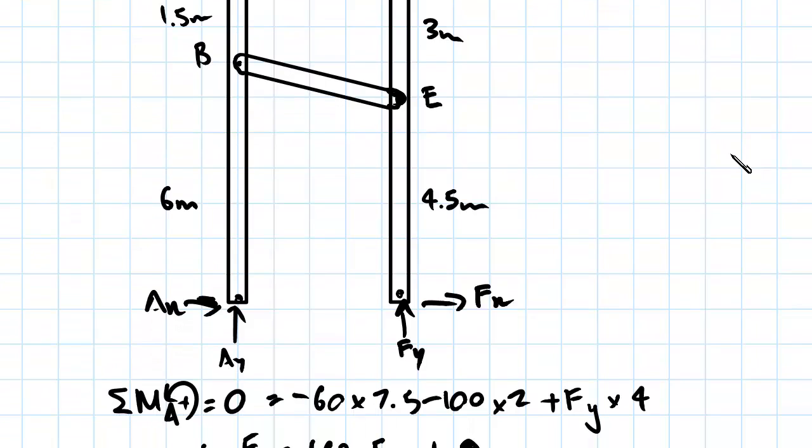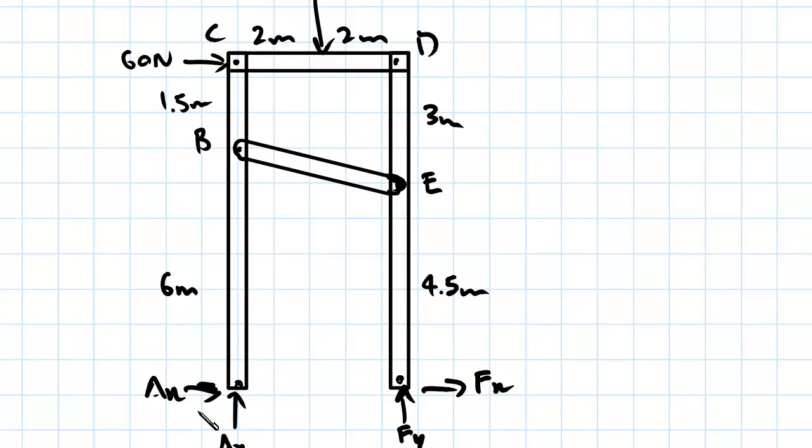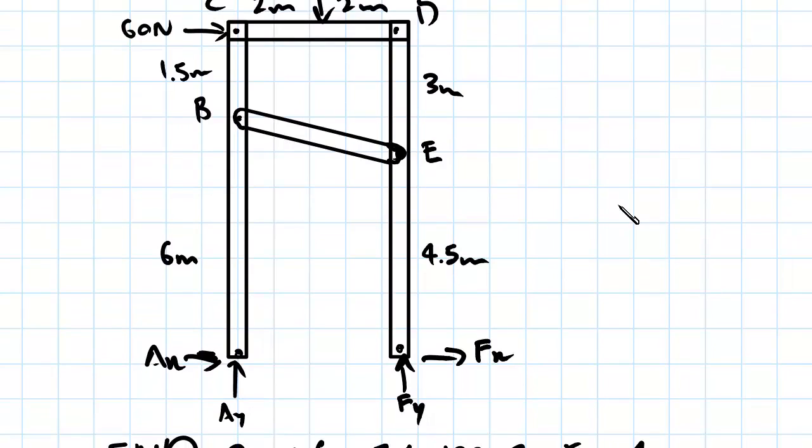So we'll start off by taking moments about A, so moments about this point here, and what we're going to be trying to find is FY, which is the support reaction at F in the Y direction. And the way we're going to do that is just by taking moments about A.